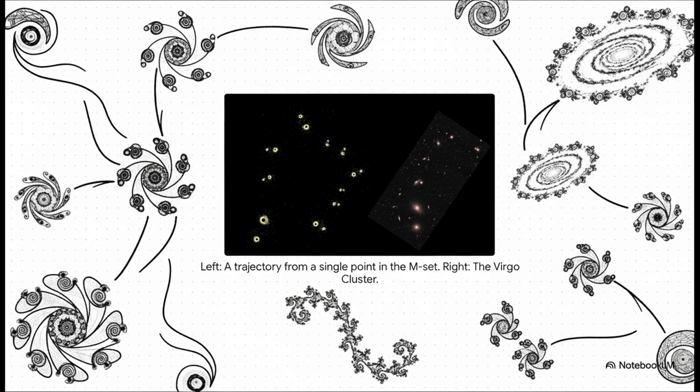And the analogy doesn't just stop at single objects. It seems to scale up to massive structures, too. On the left, there's a computer-generated galaxy cluster. And on the right, that's the actual Virgo cluster. The resemblance is pretty hard to ignore.